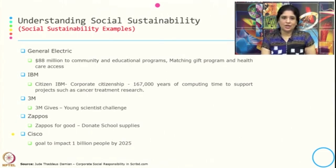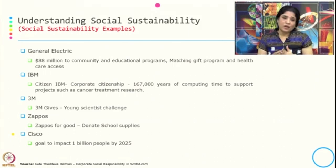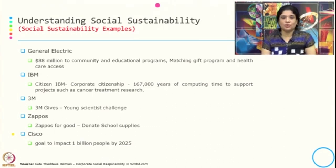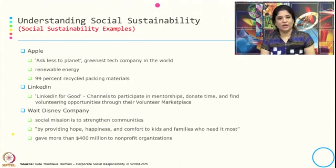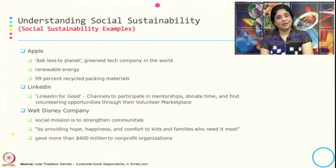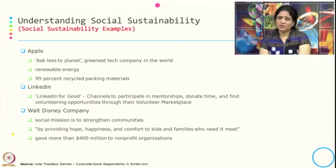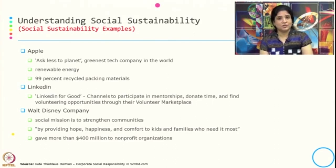Here are a few examples of social sustainability initiatives taken by companies: General Electric's matching gift program and healthcare access; IBM's corporate citizenship contributing 167,000 years of computing time to support projects such as cancer treatment research; 3M's Young Scientist Challenge; Zappos for Good donating school supplies; Cisco's goal to impact 1 billion people by 2025; Apple aiming to be the greenest tech company in the world; and LinkedIn for Good channeling participation in mentorship, donating time, and finding volunteering opportunities through a volunteer marketplace.